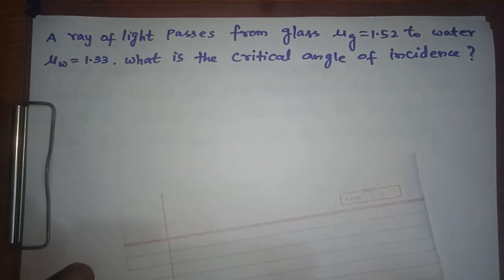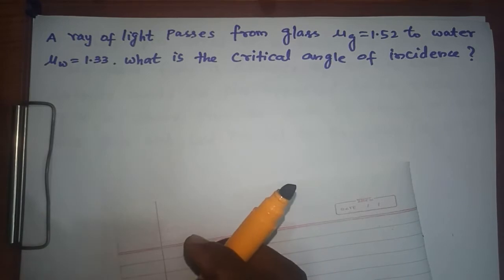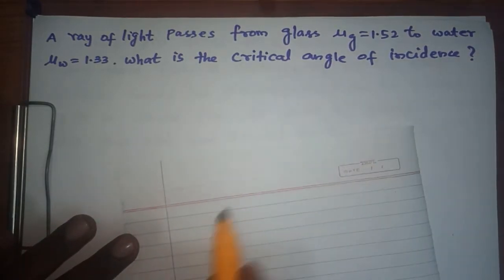Yeah, let us work out a sum over here. A ray of light passes from glass with refractive index 1.52 to water with refractive index 1.33. What is the critical angle of incidence? I have to calculate my critical angle of incidence.